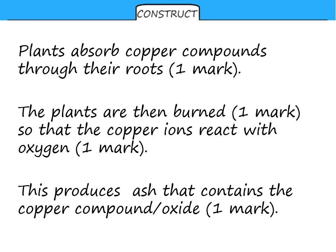Okay, so plants absorb copper compounds through their roots, that would be one mark. The plants are then burned. So the copper ions react with oxygen. This produces ash that contains the copper compound or the copper oxide.